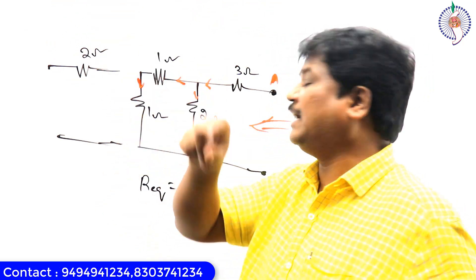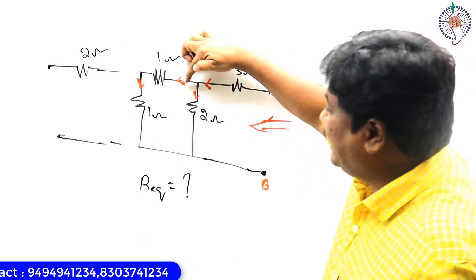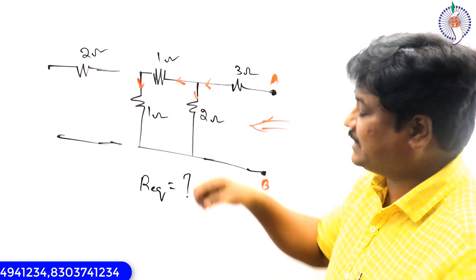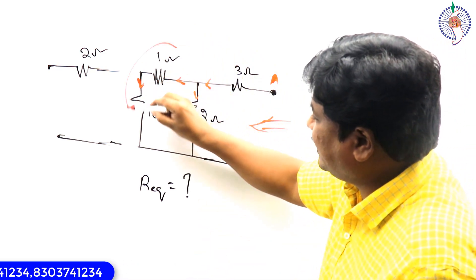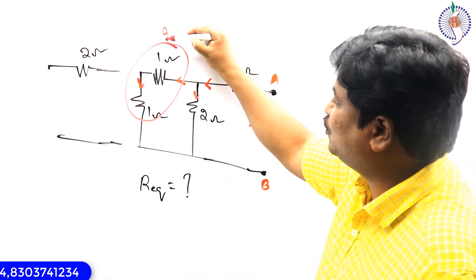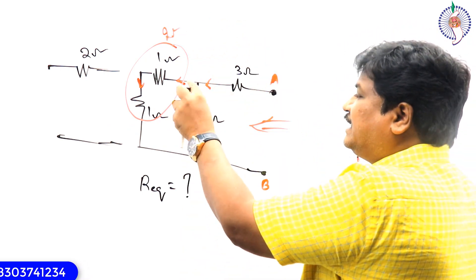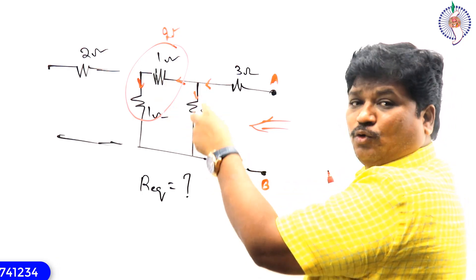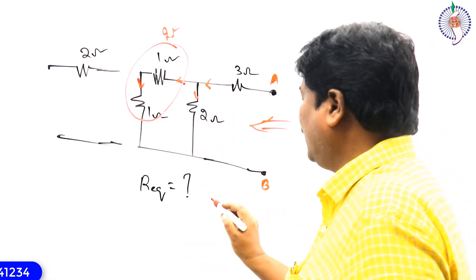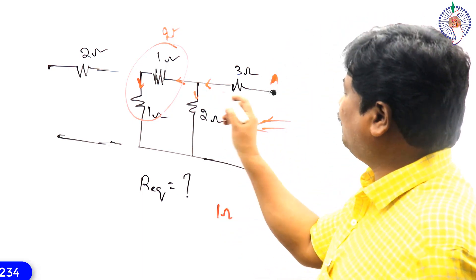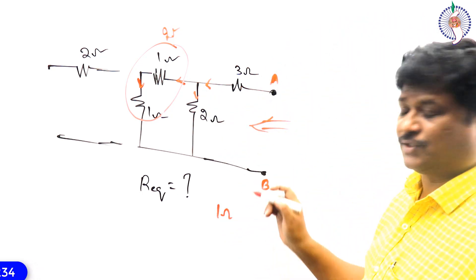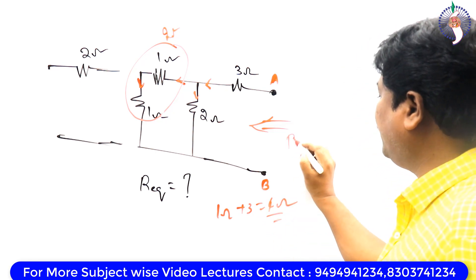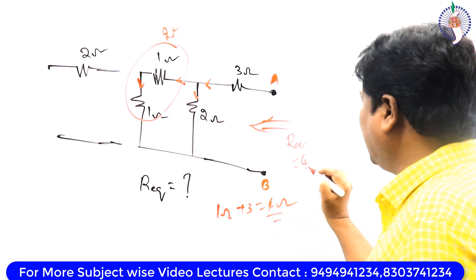So we can eliminate like this. Then you get the idea — this current and this current are in series, same current is flowing. What is the effective resistance? 1 plus 1 — it is 2 ohms. Once these two currents are dividing, 2 ohms in parallel with 2 ohms: 2 into 2 by 2 plus 2 — that becomes 1 ohm. 1 ohm in series with 3 ohms: 1 plus 3 — that is equal to 4 ohms. R equivalent when you are looking from this terminal becomes 4 ohms.